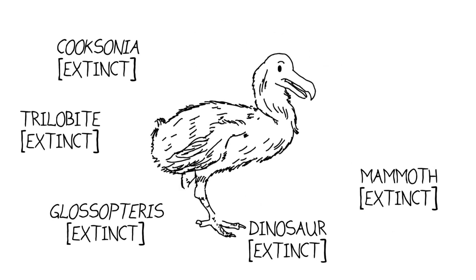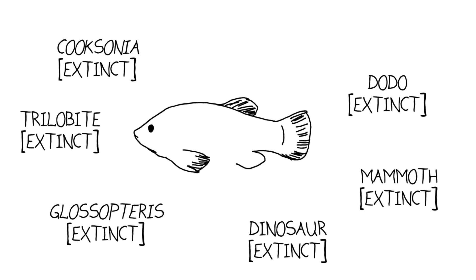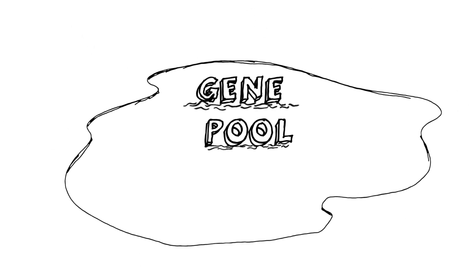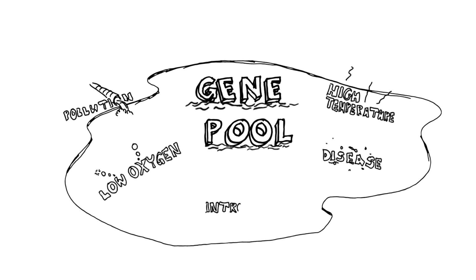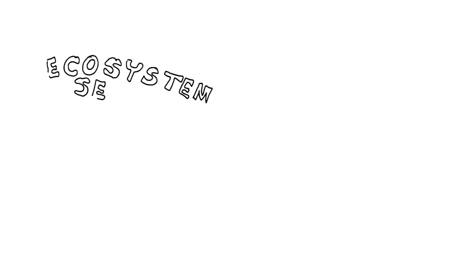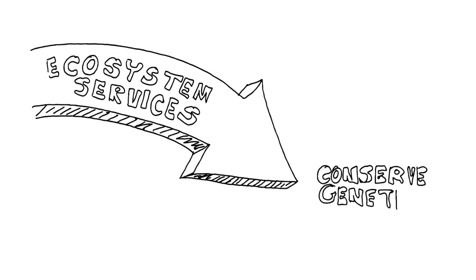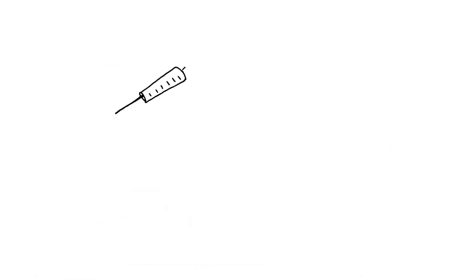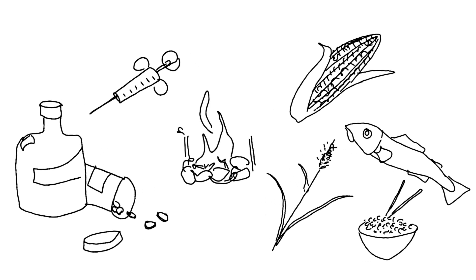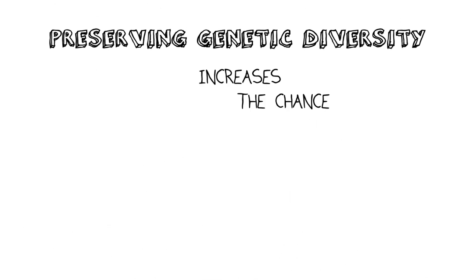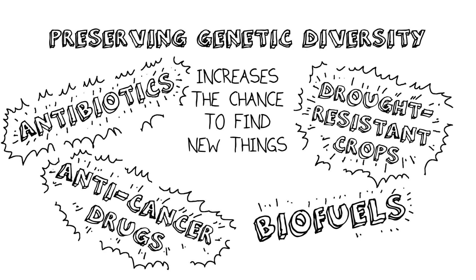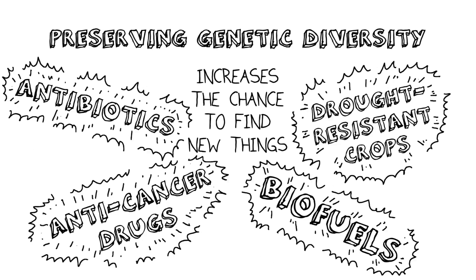As humans encroach on wild habitats, populations consequently become smaller and so does the gene pool. This represents a loss of options for a population to respond to stresses, whether those are natural stresses or stresses caused by humans. Ecosystem services arguments go straight to this idea of conserving genetic diversity. Genes control the production of substances that we use in medicine, food, and even as energy sources. Preserving genetic diversity increases the likelihood that new substances can be found among wild populations and that the supplies of useful substances we already have can be maintained.